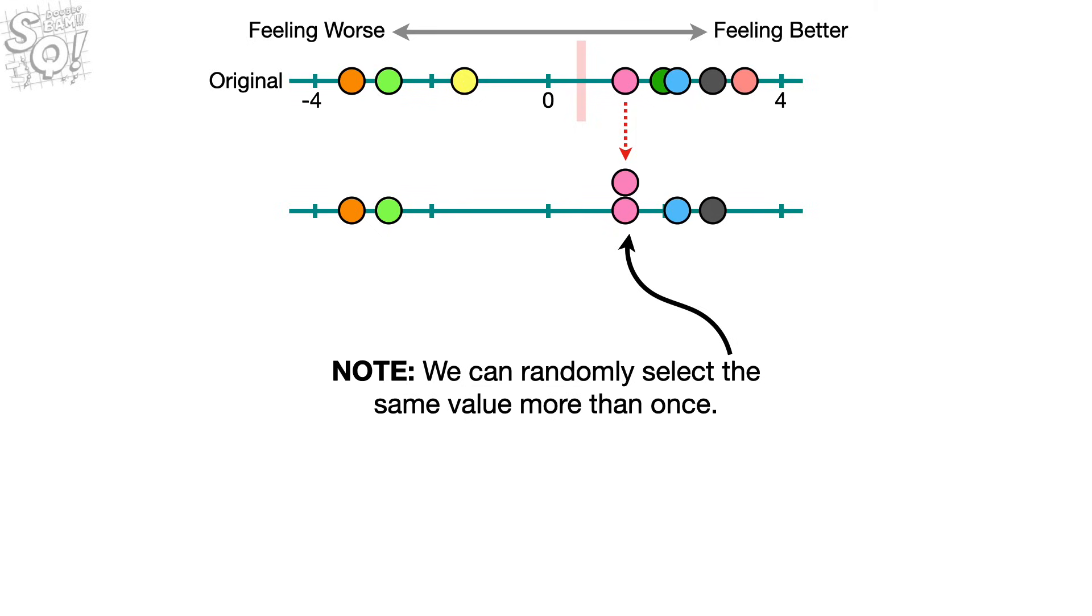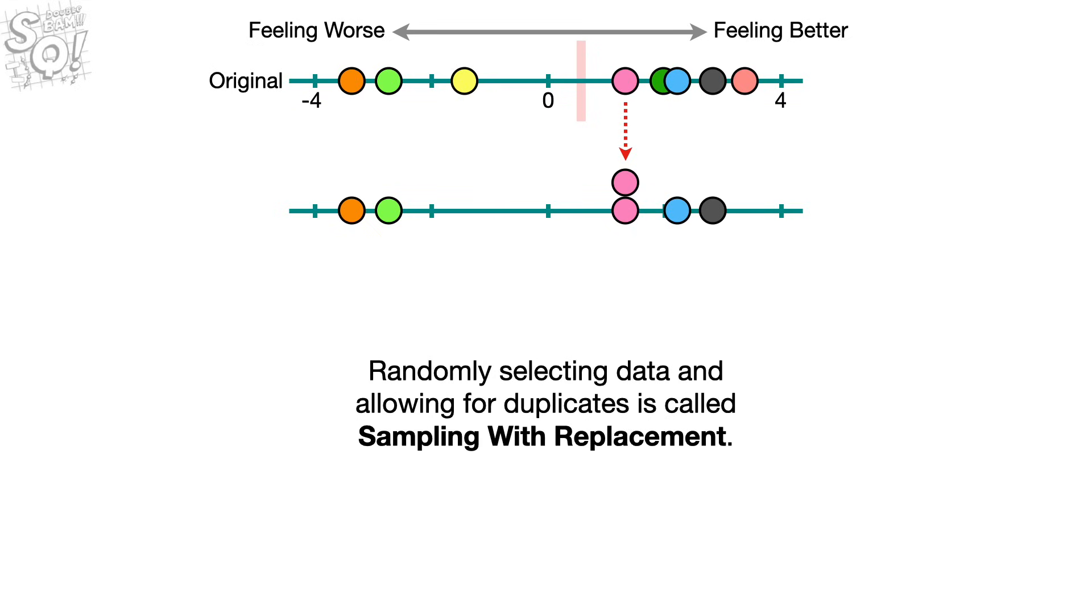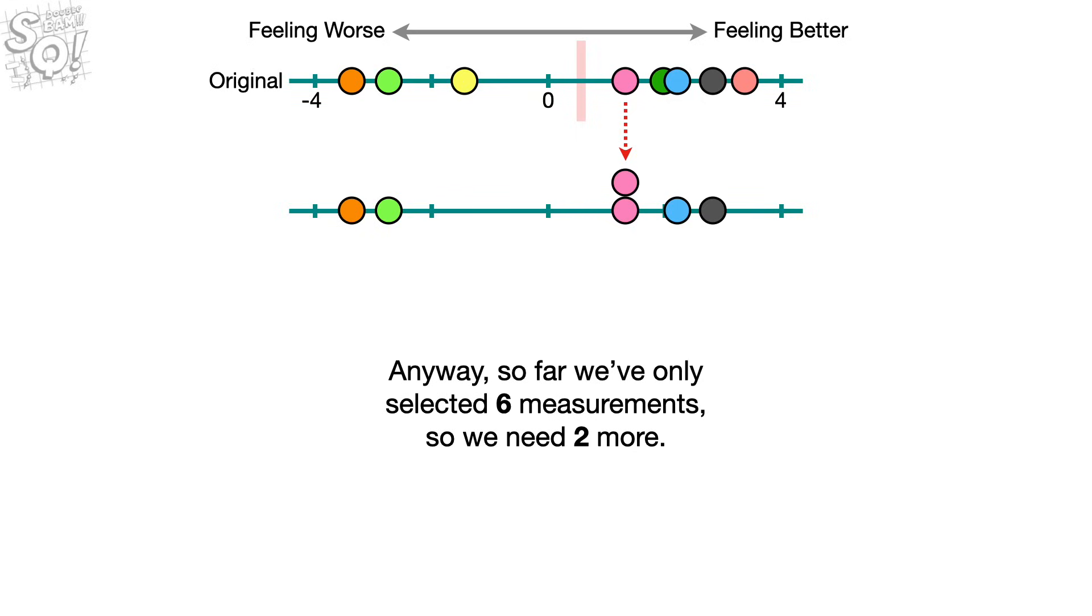Note, we can randomly select the same value more than once. Oh no, it's the dreaded terminology alert! Randomly selecting data and allowing for duplicates is called sampling with replacement. Anyway, so far we've only selected six measurements, so we need two more.